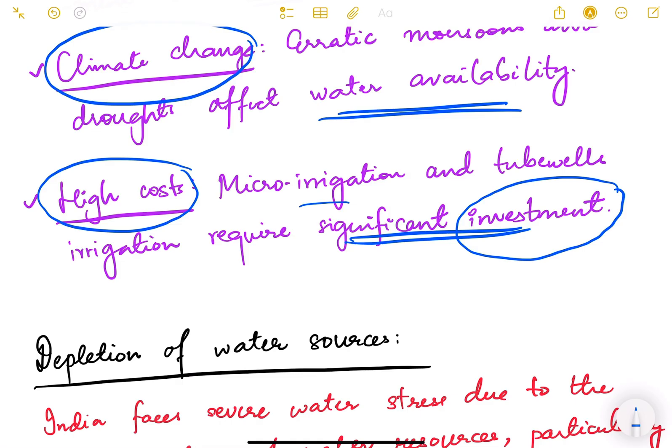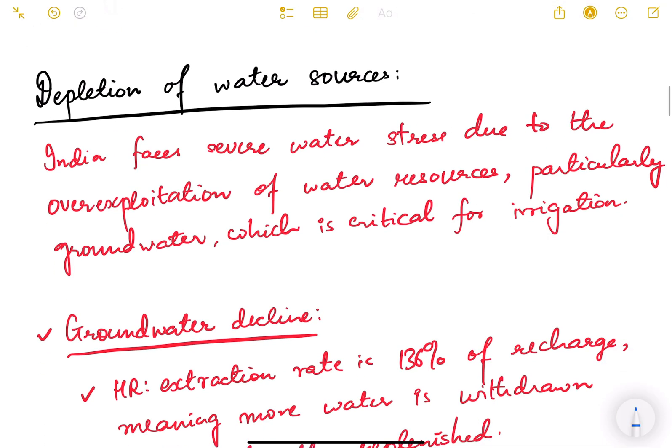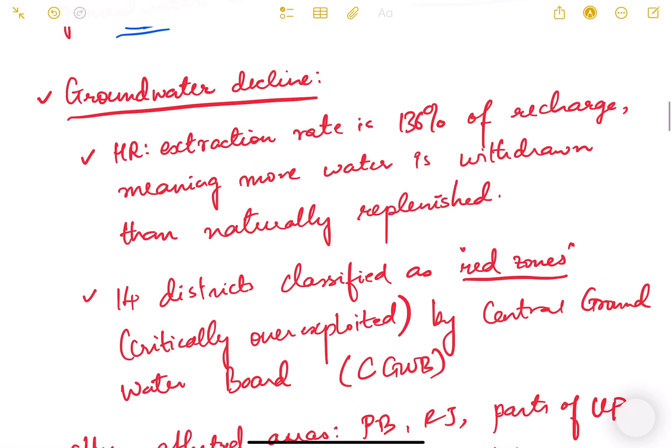These are some of the issues. Now we'll also focus on depletion of water sources. This is an important topic from UPSC point of view. India faces severe water stress due to over-exploitation of water resources, particularly groundwater which is critical for irrigation.